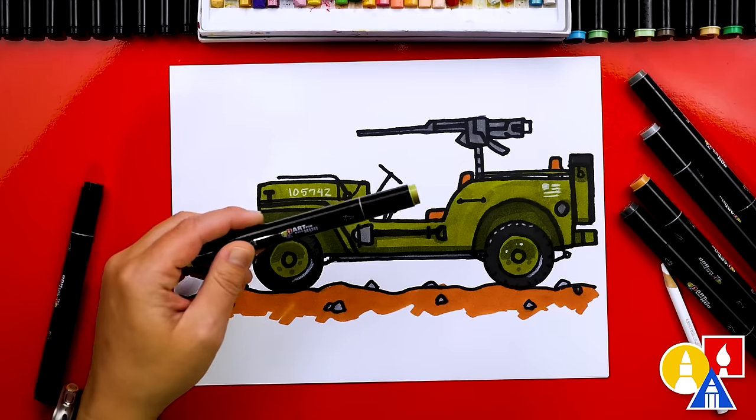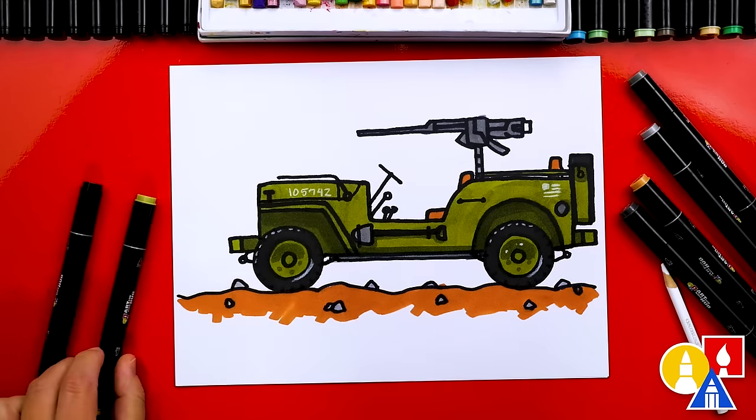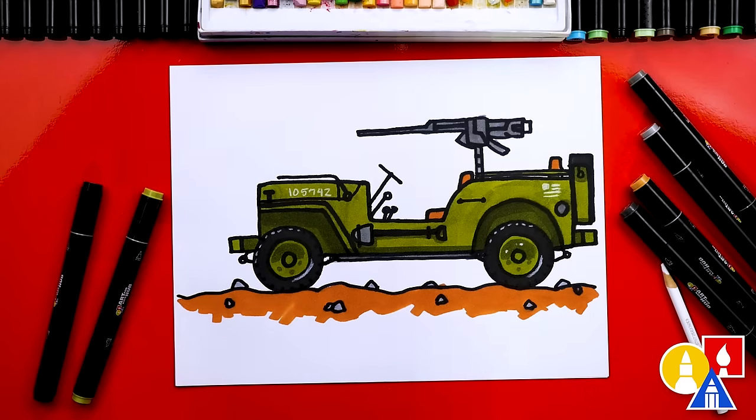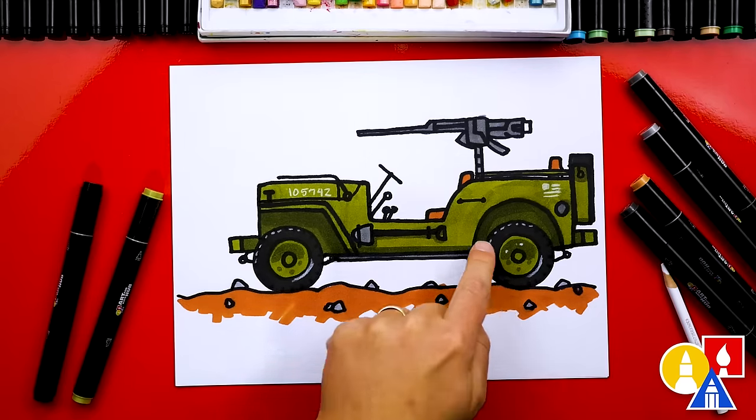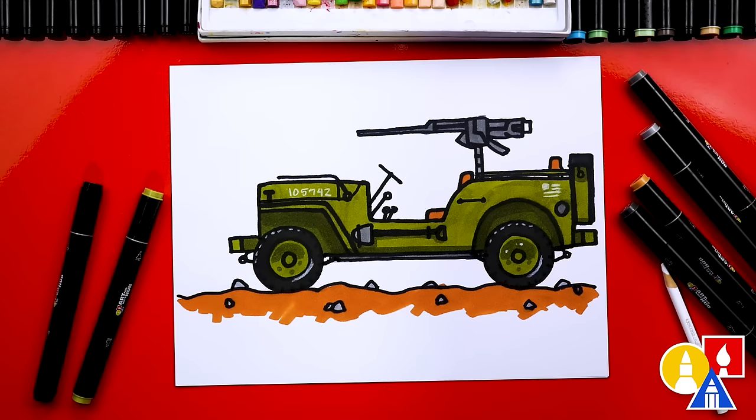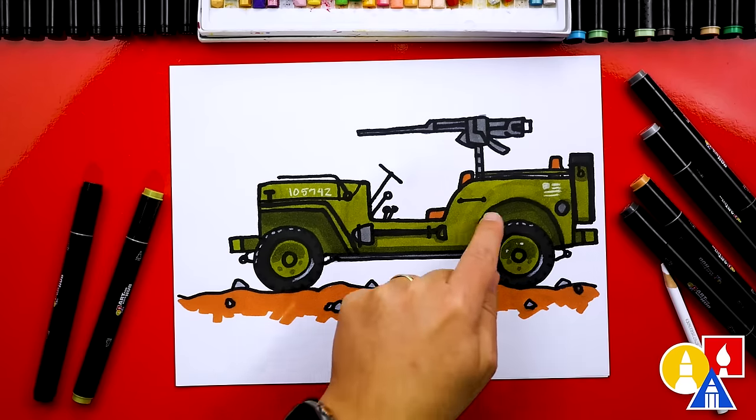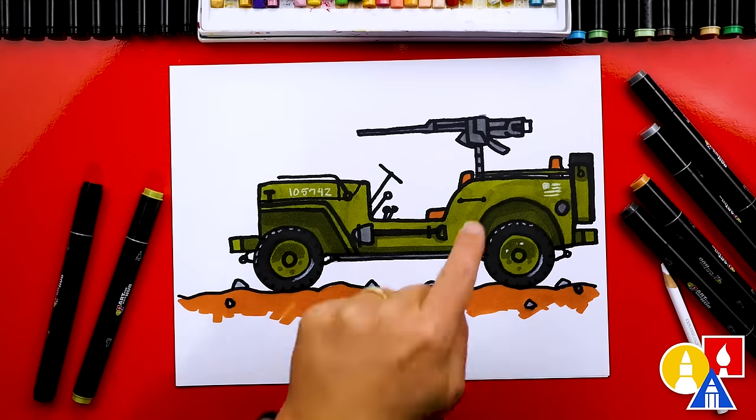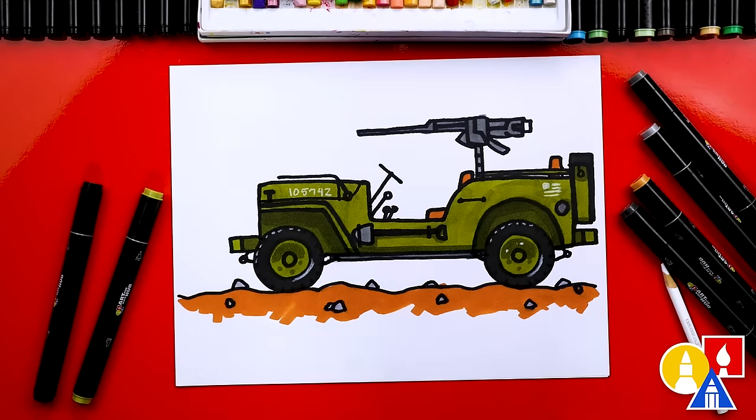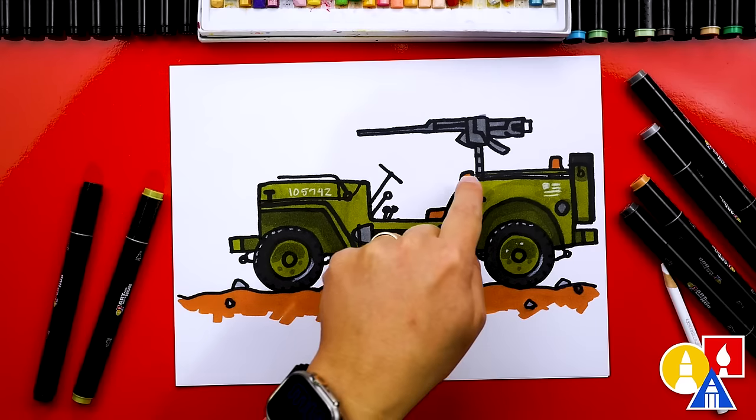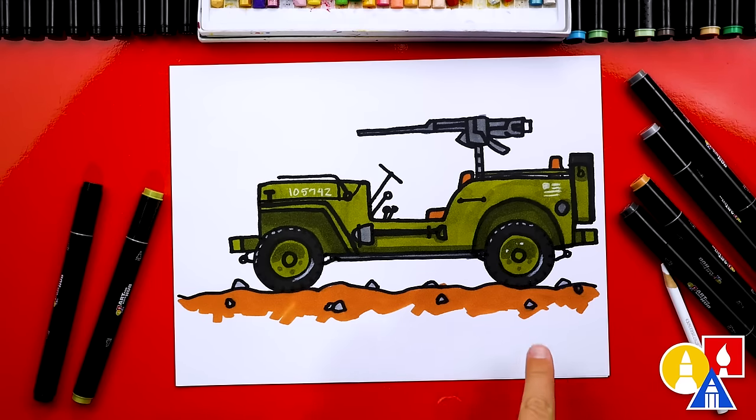If you have the same Art for Kids Hub markers that I use and you want to use the same colors, use 48 green for the main color and also inside the wheels. I also use CG9, a dark gray for the tires. And then I use CG5 to add shading inside of the wheel wells. I also use that color for the heavy machine gun. Then I use 103 for the dirt and also the seats. And then CG1 for the rocks.